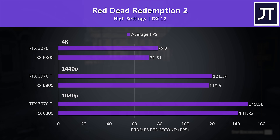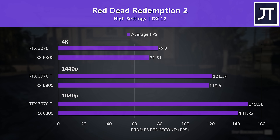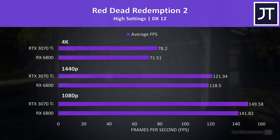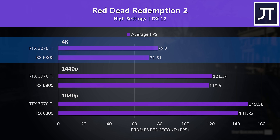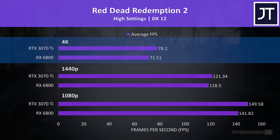Red Dead Redemption 2 was also tested using the game's benchmark. This time the 3070 Ti was ahead of the 6800 in all three resolutions, and the gap is the largest at 4K where the 3070 Ti was reaching around 9% higher average FPS compared to the 6800.